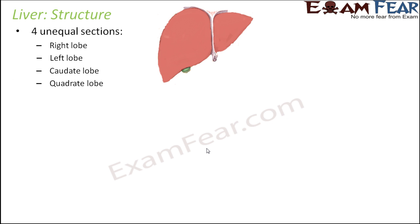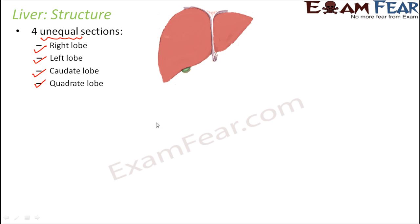If you talk about the different sections, the liver structure is broadly divided into four unequal sections: the right lobe, left lobe, caudate lobe, and the quadrate lobe. However, because of the unequal size of the four lobes, sometimes it is also considered that mainly the liver is made up of two lobes, because the caudate and quadrate lobes are very small when compared to the right and left lobes.